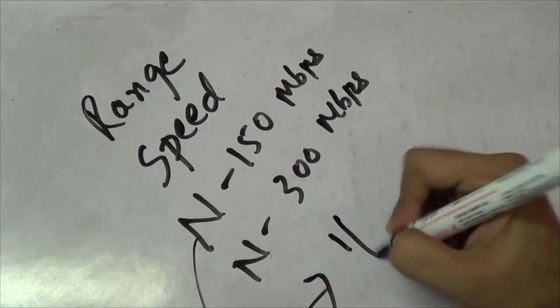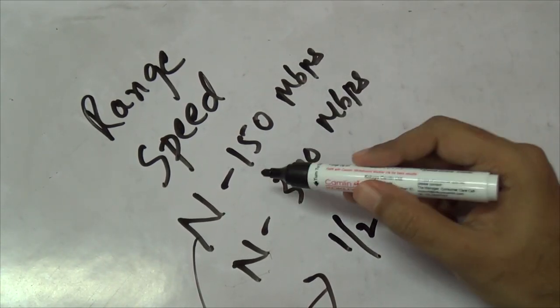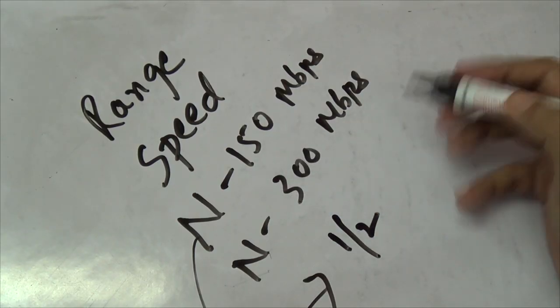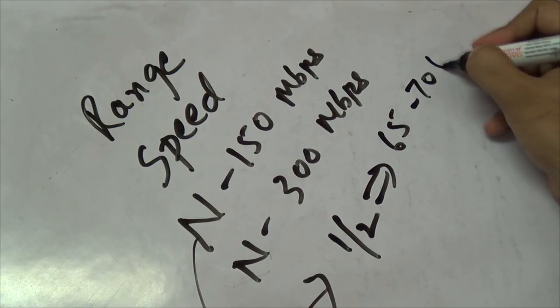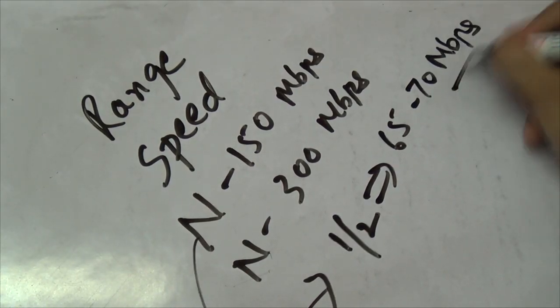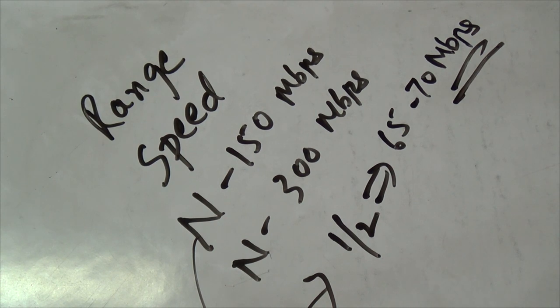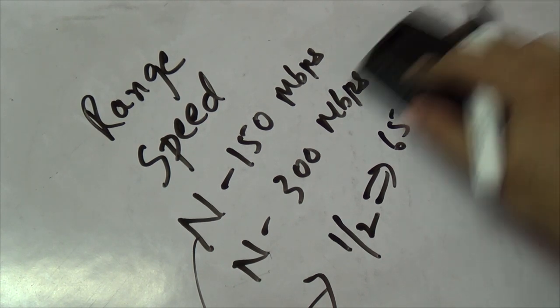In real world scenarios, the speeds that you get, best case scenario I'm talking, is half the rated speed. For example with this N150, the max speeds that I've seen are around 65 to 70 Mbps megabits per second. So you need to keep this into account.